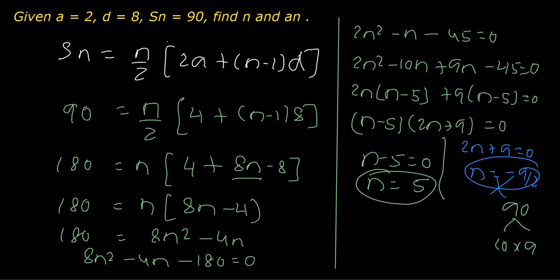In the later part, they have also asked to find an, that is the nth term. The nth term can be calculated as an = a + (n-1)d. So we have a, the first term given as 2, plus n calculated as 5, so 5 - 1 = 4 times d, and d is 8. This is 2 + 32 = 34. So we got an = 34.